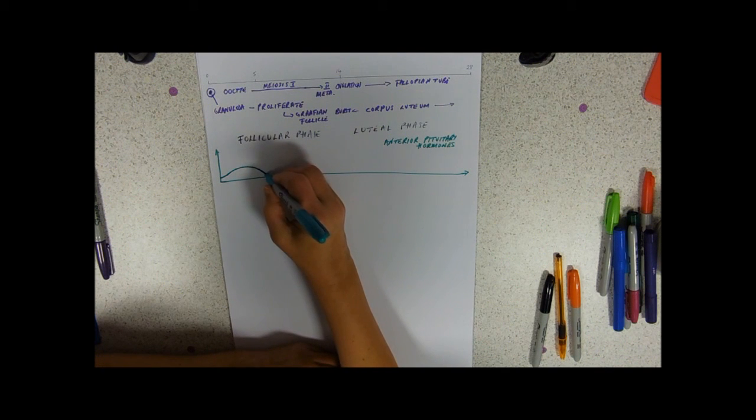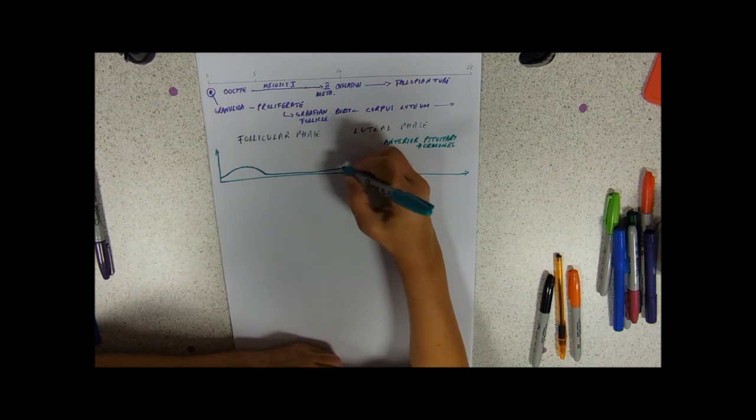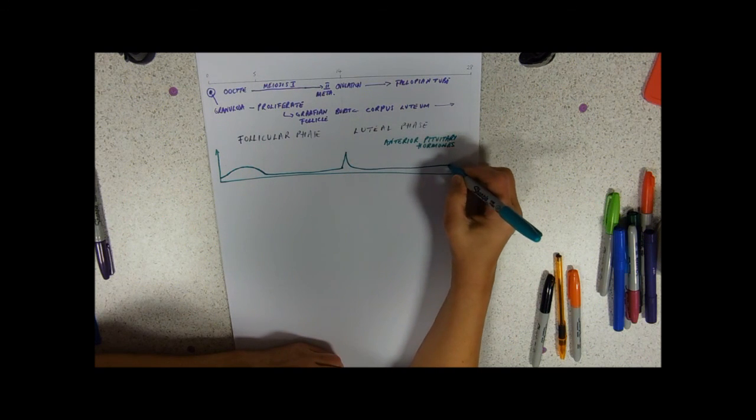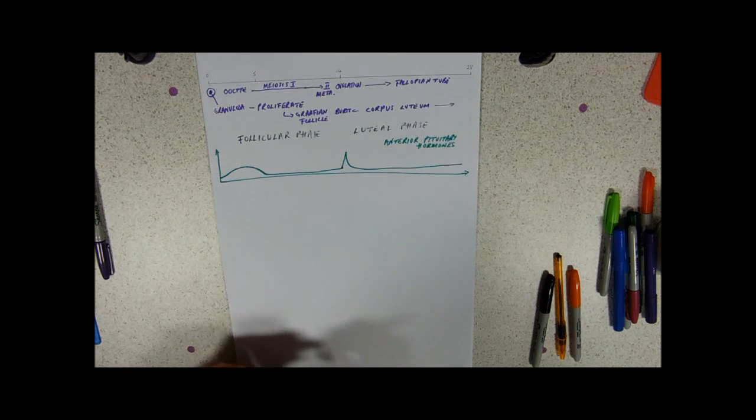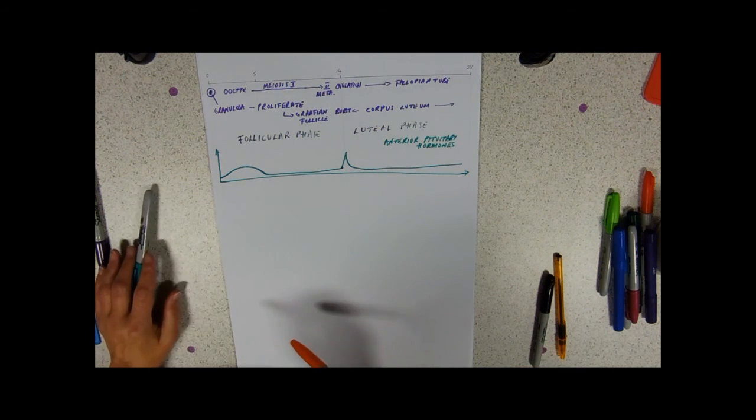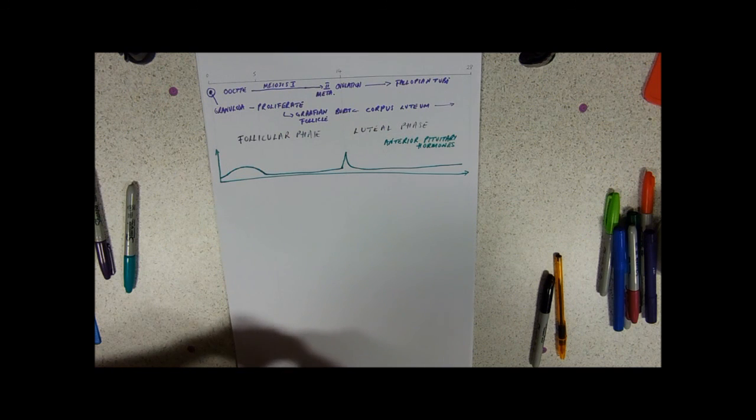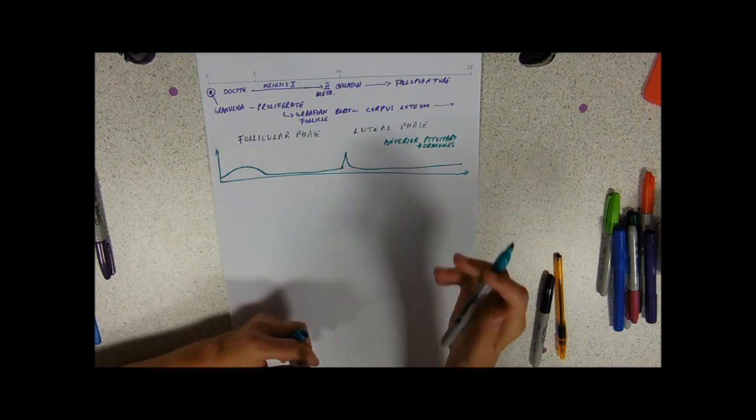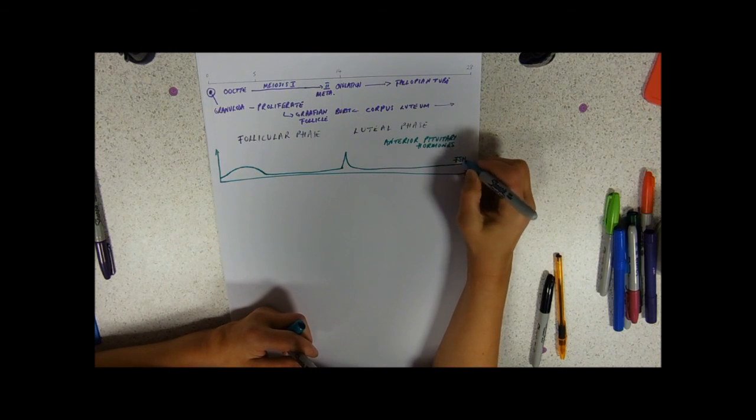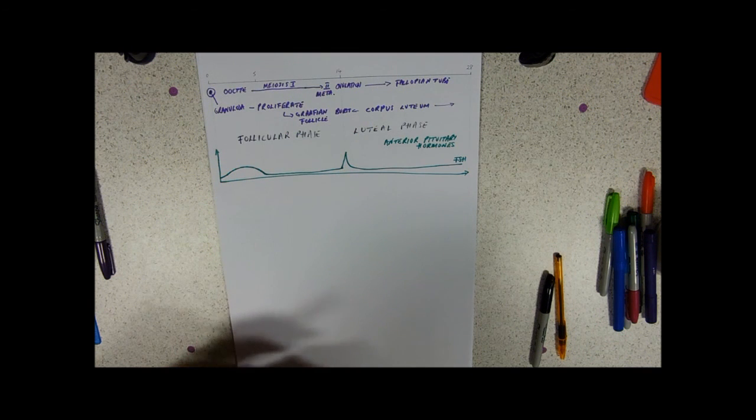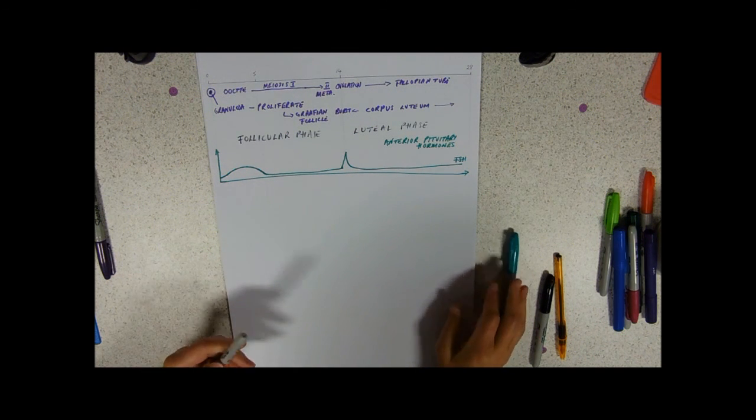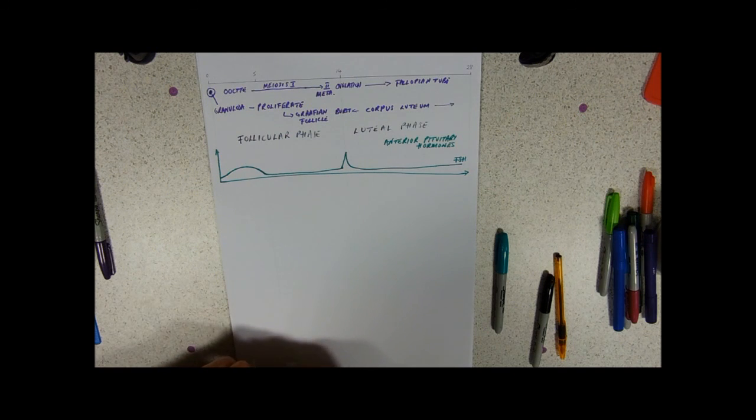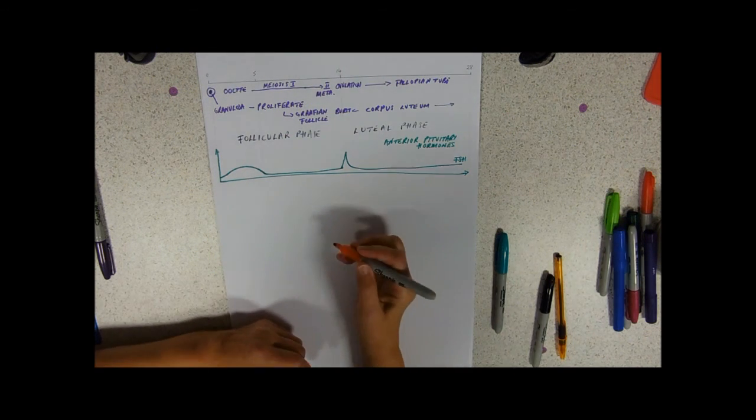It then dips down all the way to ovulation. At ovulation we get a sudden little spike and then it's at fairly low levels again. So follicle stimulating hormone - FSH is a standard abbreviation.